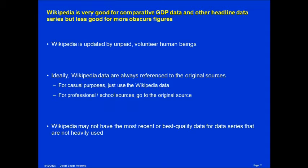Wikipedia is especially good for comparative GDP data and other headline data series. It can be less good for more obscure figures. Remember, Wikipedia is updated by unpaid, volunteer human beings like you and me. There's no large paid staff updating Wikipedia data on a daily or monthly basis. It's all volunteer labor, and so the biggest, most headline-grabbing numbers get done regularly. Other, more obscure data series may be updated rarely or may not be in Wikipedia at all.